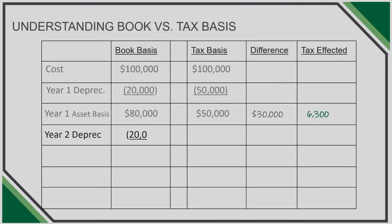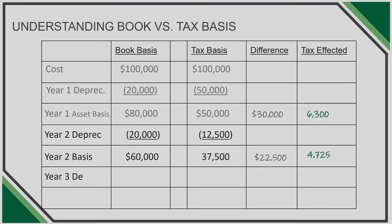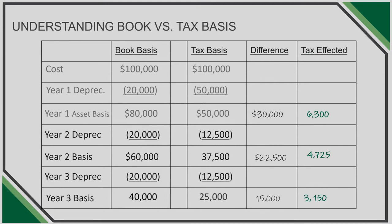Going back to our tax and book basis balance sheet, let's compute the varying basis over the next few years and work through how to make our adjusting entries to deferreds based on year-by-year changes. In year 2, we continue to have a difference in both our depreciation amounts during the year and a difference in the ending value of our asset. The total tax effect of that difference decreases from $6,300 in year 1 to $4,725 in year 2.